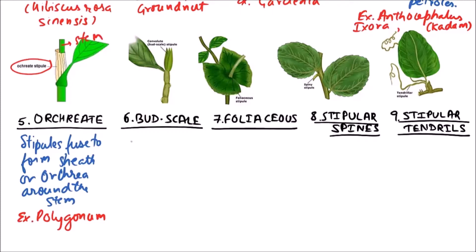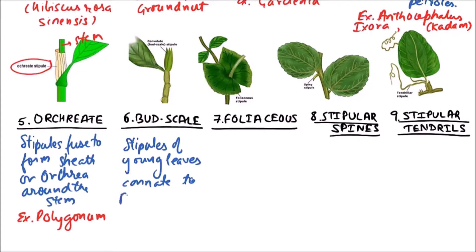The next type is Bud Scale. In Bud Scale, the stipules of young leaves connate to protect the bud. Examples include Ficus.